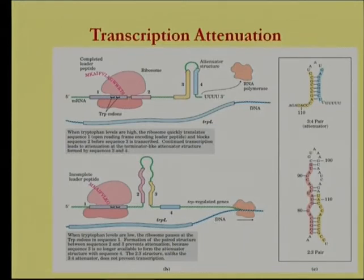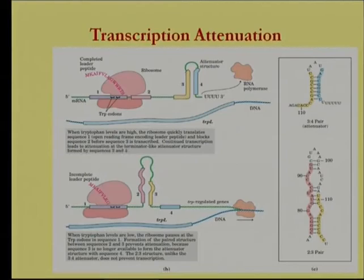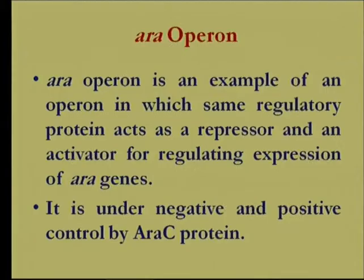When tryptophan levels are low, genes encoding enzymes for tryptophan biosynthesis are needed, so trp mRNA must be synthesized continuously. The 2-to-3 pairing does not result in attenuator structure formation, allowing continued transcription. In summary, the trp operon is subject to repressible negative control by the trp repressor and additionally subject to attenuator control.